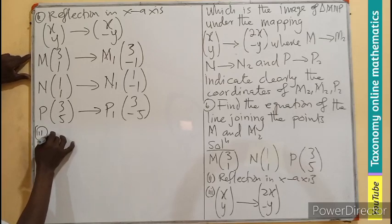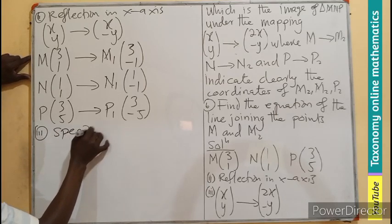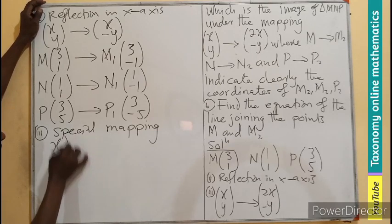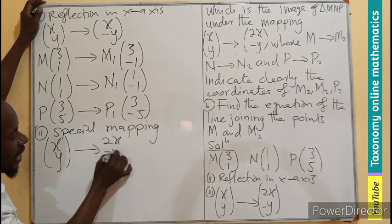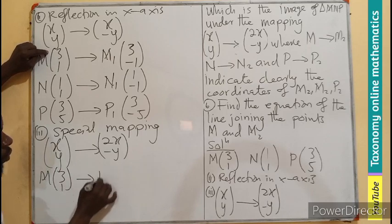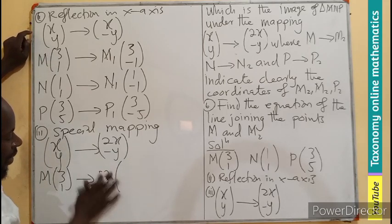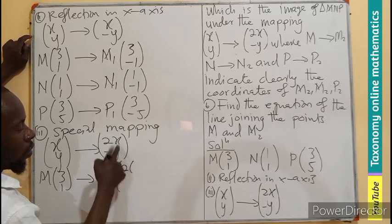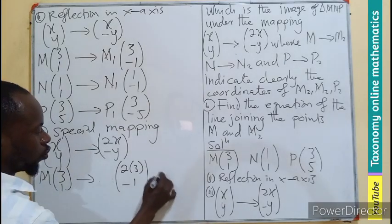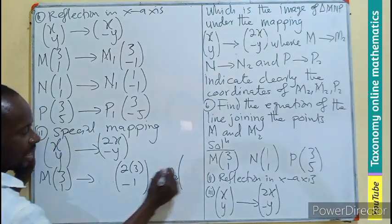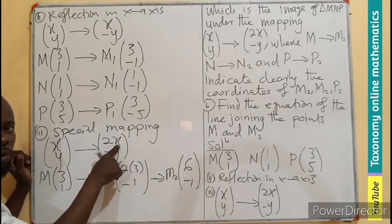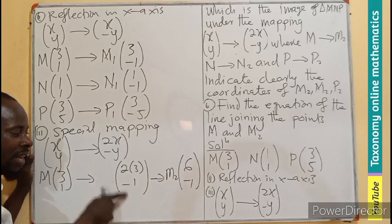Then, the third one, which is a special mapping. The mapping is (X,Y) is mapped to (2X, negative Y). So, let's take the first one, M(3,1), your M2 will now be 2 of the X, which will be 3, the negative 1, which will now map to M2 to be (6, negative 1). I believe you get the special mapping. The value of X will be replaced here, the 2 is a constant, the Y is negative.